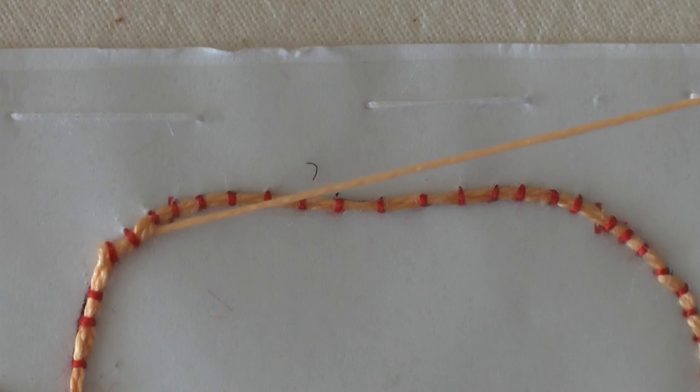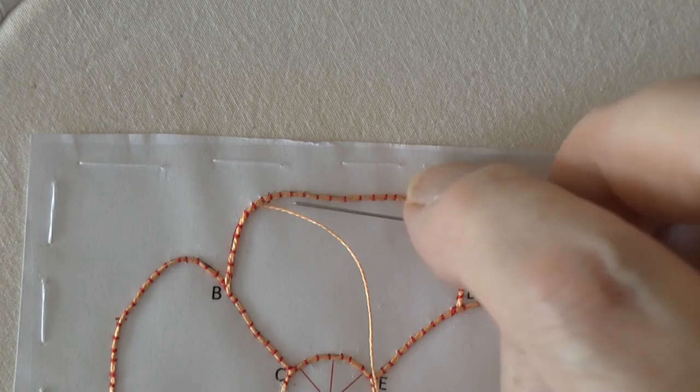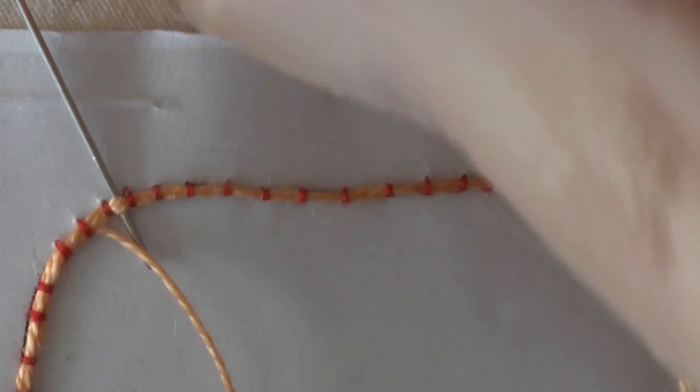So we're now ready. We've got the thread on the inside of the space, and we're now ready to make our first line of buttonhole stitches. To make your buttonhole stitches, run the needle under the coordinate and over this thread.